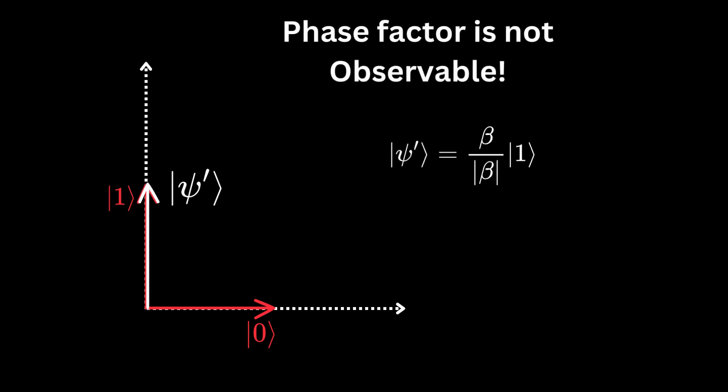At the final stage, we observe one, not some factor times one. It means that phase factor is not observable. Because beta over absolute value of beta is a complex number of length 1, and can be represented as e to the i theta. And we know that the length of e to the i theta is equal to 1. Despite its non-observability, the phase factor plays a crucial role in the underlying quantum states.